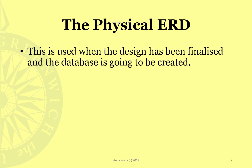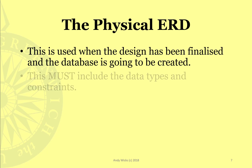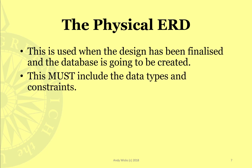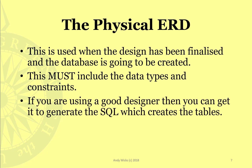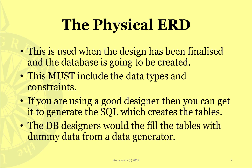You use the Physical Entity Relationship Diagram when the design has been finalized and everybody agrees it's a good design, and now the database is going to be created. This must include the data types and the proper constraints. If you're using a good database design tool, you can get it to generate the SQL that creates the tables. The designers could also go on to use a data generator to fill the tables with dummy data — that's the 6+ part — to check that the fields are correct and that the SQL for the final application actually works.